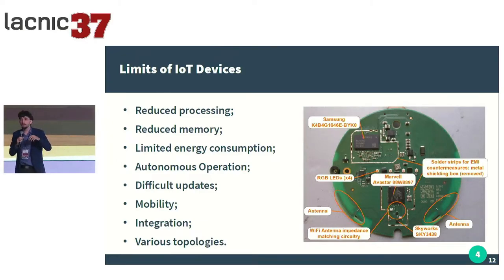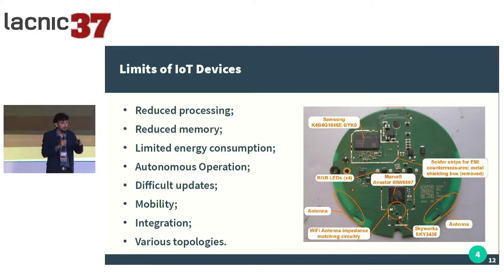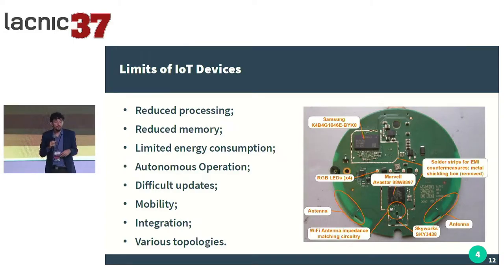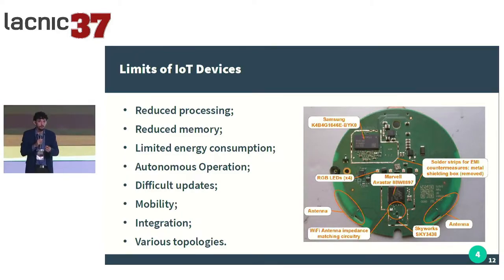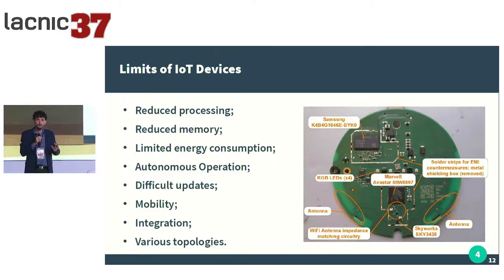These devices operate practically in an autonomous way — they are sent to their location. In many cases, it is very difficult to have direct maintenance on that machine, and the ways to access those files or devices are very limited. The interfaces are simpler. We have a very large difficulty with updates, because as we are not able to access those devices, we have significant constraints that create a lot of stability issues.